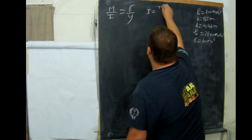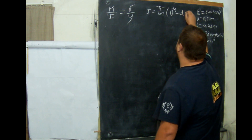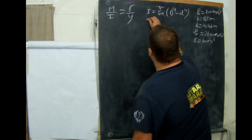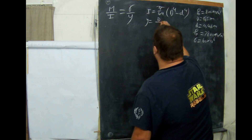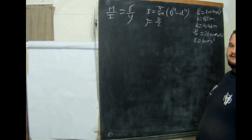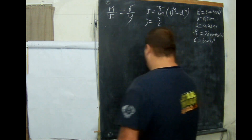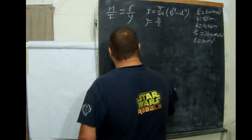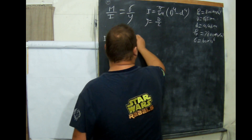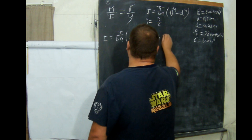I is equal to pi over 64 times (D to the 4 minus d to the 4). And Y, in this particular case, is big D over 2. We have all these values and all we have to do is put them into our formula. So I is equal to pi over 64 times 0,5 to the power of 4 minus 0,46 to the power of 4.